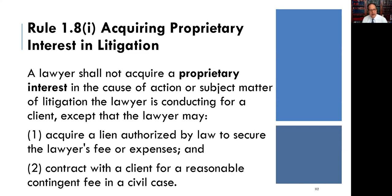For purposes of the MPRE, you may be asked whether contingent fees are permissible at all. You should be aware that some other common law countries don't allow contingent fees or strongly disfavor them. Also, the MPRE will very commonly have at least one question about a lawyer taking a lien — kind of like a mechanics lien or a plumber's lien — on the client's file and papers as security for the fee in case the client doesn't pay.